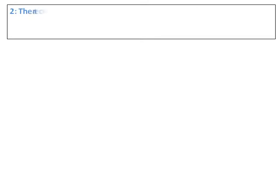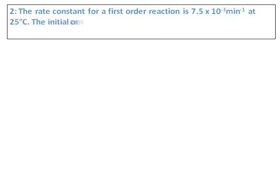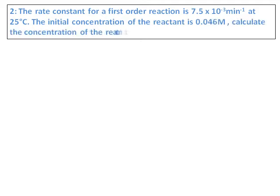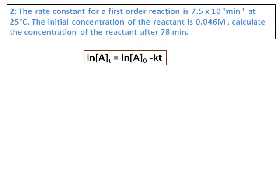We will do one more question on the integrated rate law. The rate constant for a first-order reaction is 7.5 × 10⁻³ min⁻¹ at 25 degrees Celsius. The initial concentration of the reactant is 0.046 molar. Calculate the concentration of the reactant after 78 minutes. This is a straightforward question where we use the integrated rate law. The main purpose of this question is to show how to calculate ln values and convert them into exponential values to get the actual concentration.